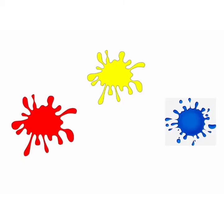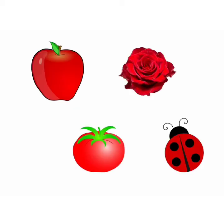So let's see the pictures. Red, yellow, blue are primary colors. An apple is red. A rose is red. A tomato is red. And a ladybug is red.